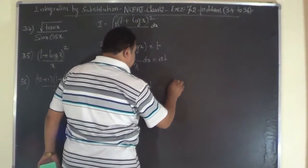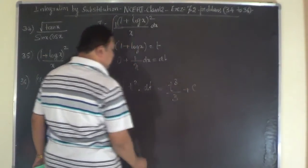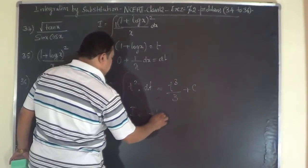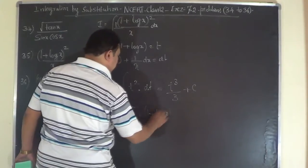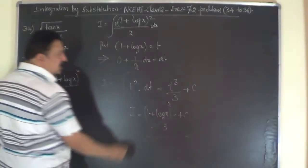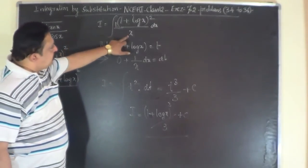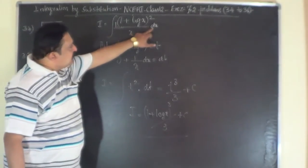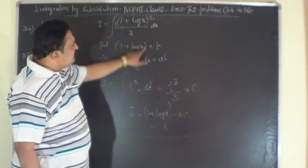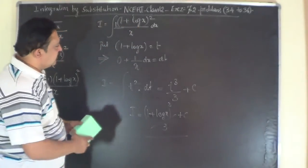This becomes t cubed by 3 plus c after integration. Therefore i equals (1 + log x)³ divided by 3 plus c. Remember: if you have 1 by x dx in the problem, put log x equals t or 1 plus log x equals t.